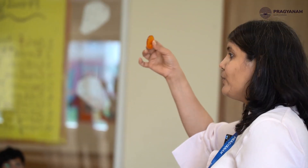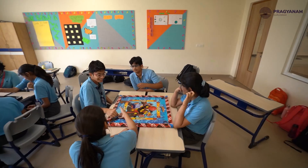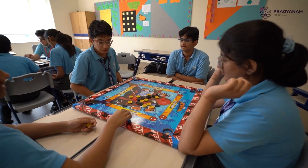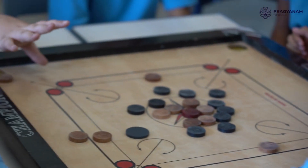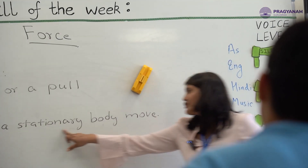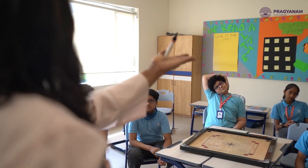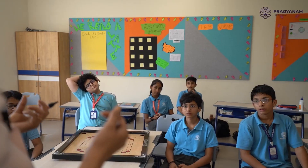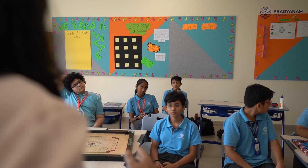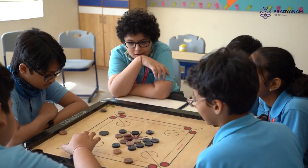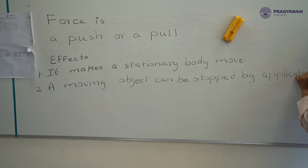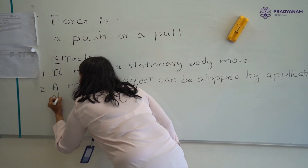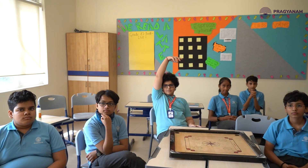The ground was applying force in the opposite direction, which caused the striker to stop. So now let's have a game of carom. This was force — this was the introduction. They are doing it for the first time. What exactly is force and what is the effect of force? Can I say when we apply force it makes a stationary body move? Where do you see this in your daily life?